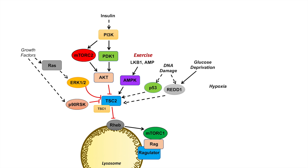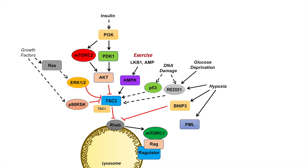Another major cellular stressor is hypoxia. Hypoxia activates several things: REDD1, BNIP3, and PML or promyelocytic leukemia tumor suppressor. These all have different regulatory mechanisms. BNIP3 inhibits RHEB, which ultimately acts like TSC2 — once we inhibit RHEB, it leads to inhibition of mTOR complex 1 and mTOR signaling. PML or promyelocytic leukemia tumor suppressor inhibits mTOR complex 1 directly.